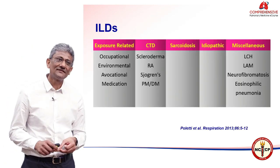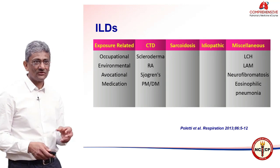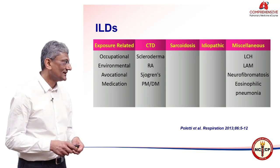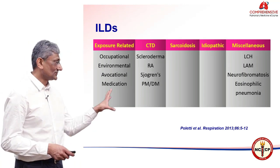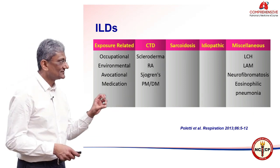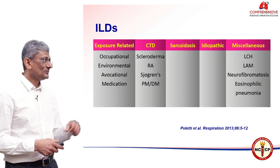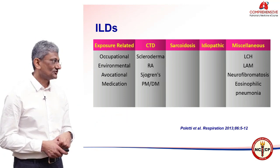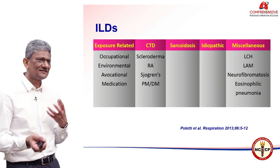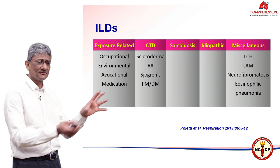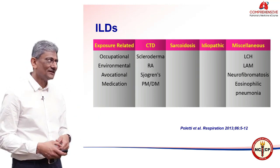Let's look at the various ILDs that we have. Dr. Poletti put them into five buckets: exposure related, which is obvious; then all the CTDs; then sarcoid, with its own bucket because it's such a great mimic; then the idiopathic interstitial pneumonias; and then the miscellaneous group, which remains miscellaneous because we don't know enough about these conditions yet — but hopefully at some point in the future they will move into one of the other buckets.